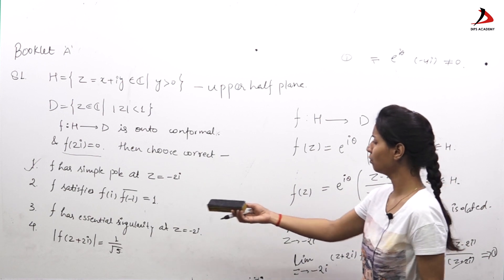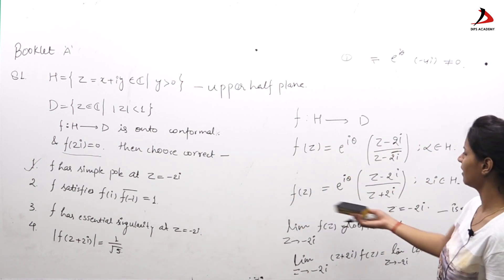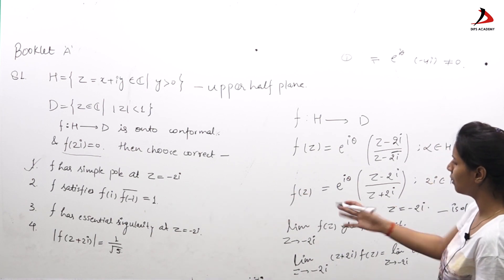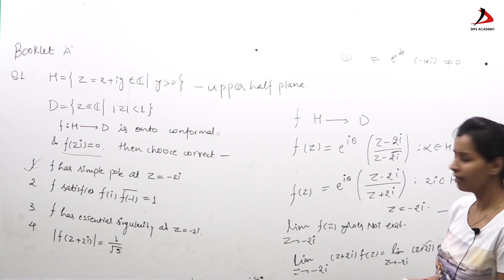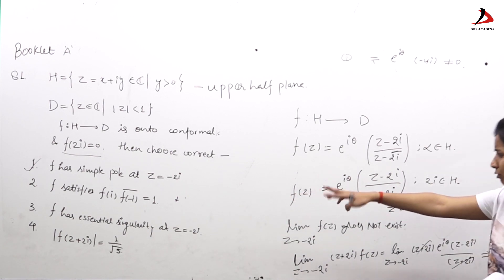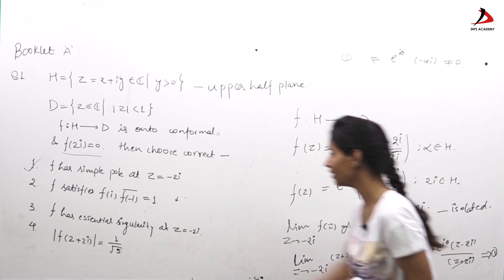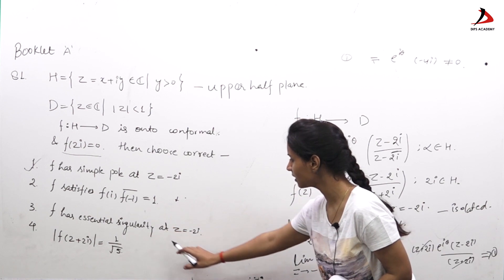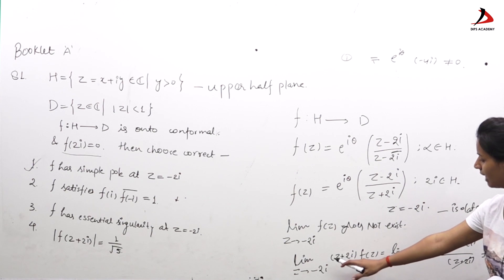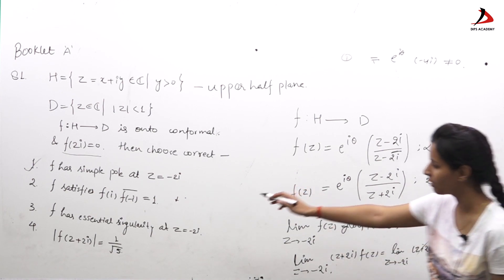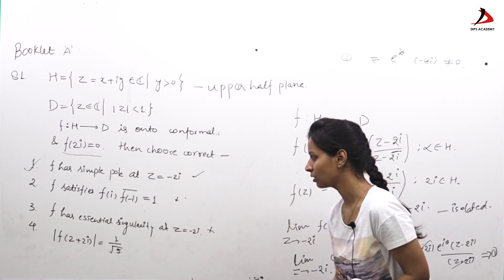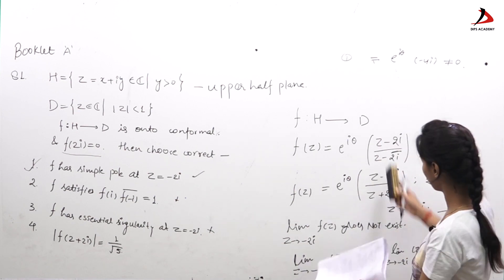For Option 2, substituting z = i and z = −i shows the value is not equal to 1, so Option 2 is incorrect. For Option 3, which claims f has an essential singularity at z = −2i — since we already showed it has a simple pole there, it cannot be an essential singularity, so Option 3 is wrong.